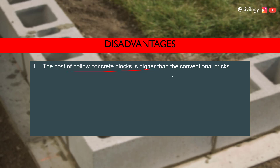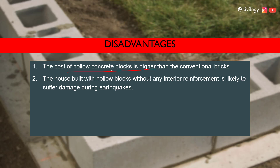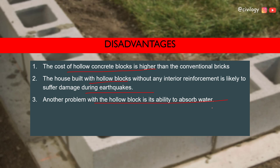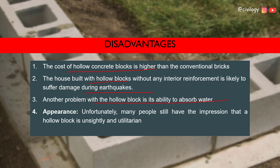Regarding disadvantages: the cost of a hollow concrete block is higher than conventional brick, though overall masonry cost will be less. A house built with hollow blocks without interior reinforcement is likely to suffer damage during an earthquake. Another problem is the ability of hollow blocks to absorb water. Unfortunately, many people still have the impression that a hollow block is unsightly and utilitarian, because the blocks are hollow and look unusual.